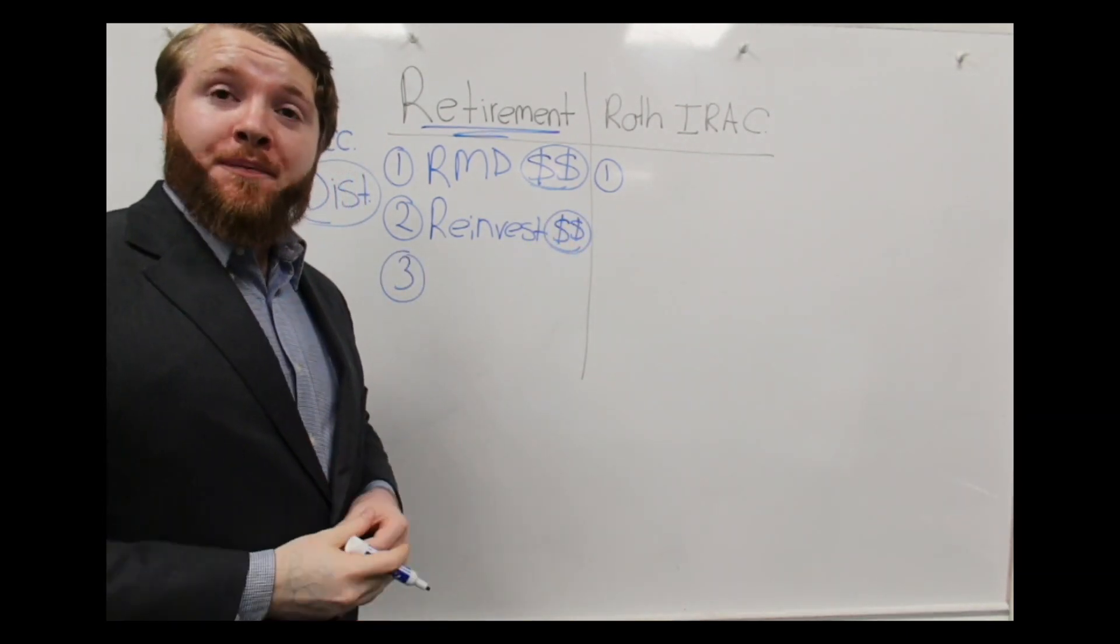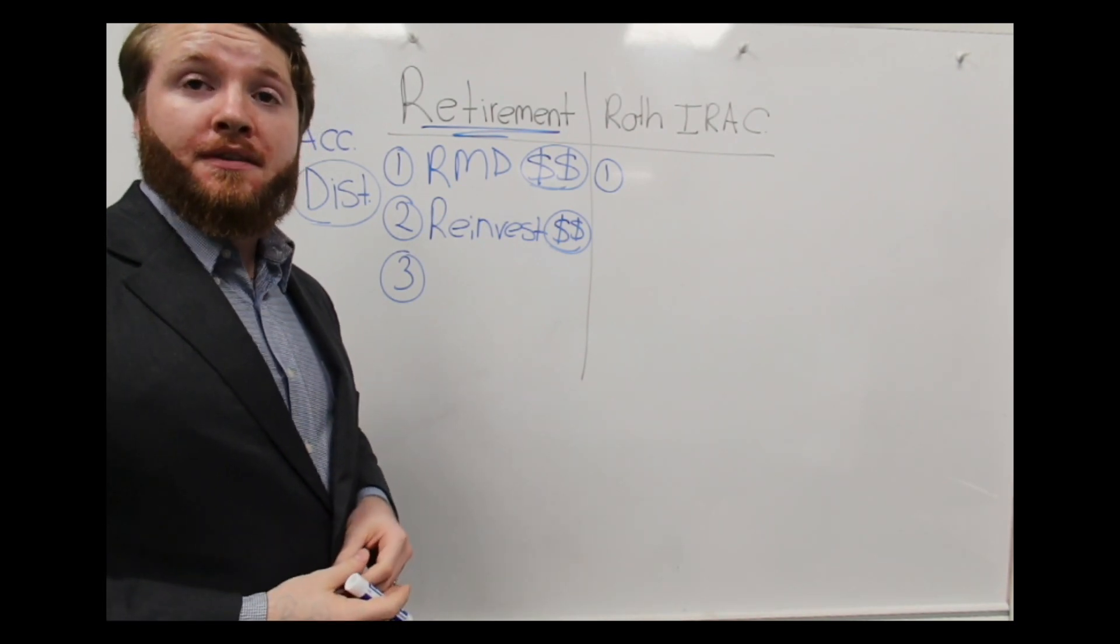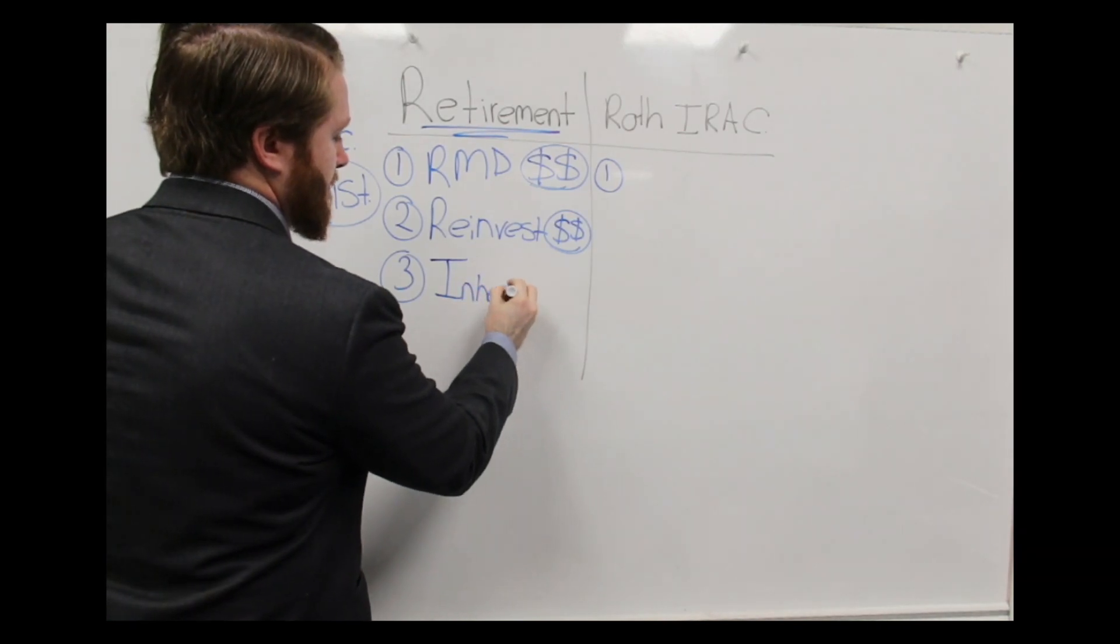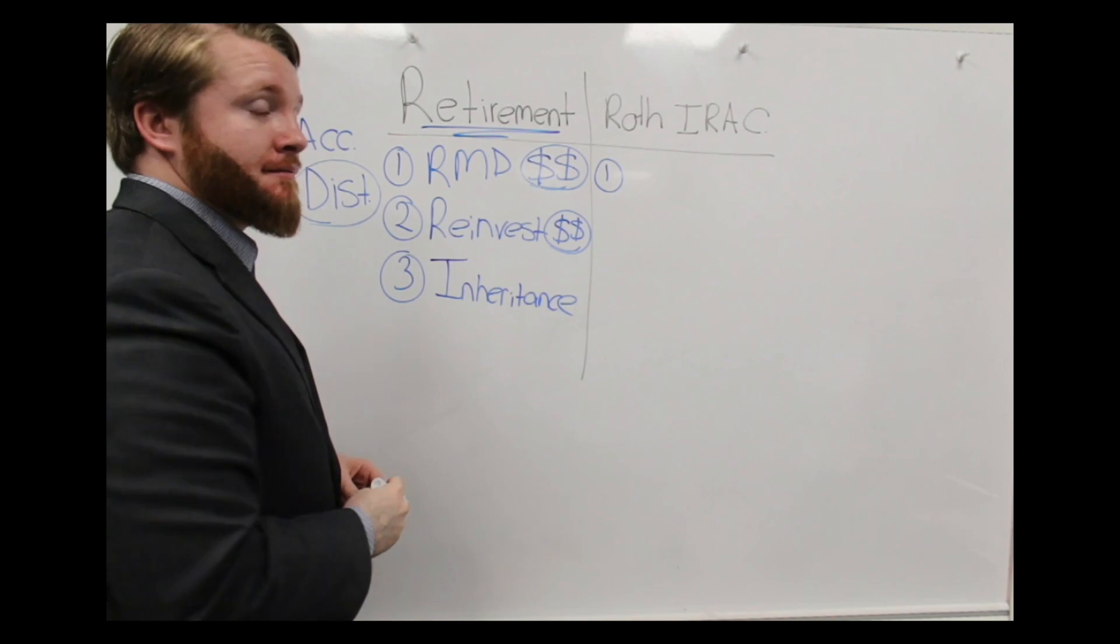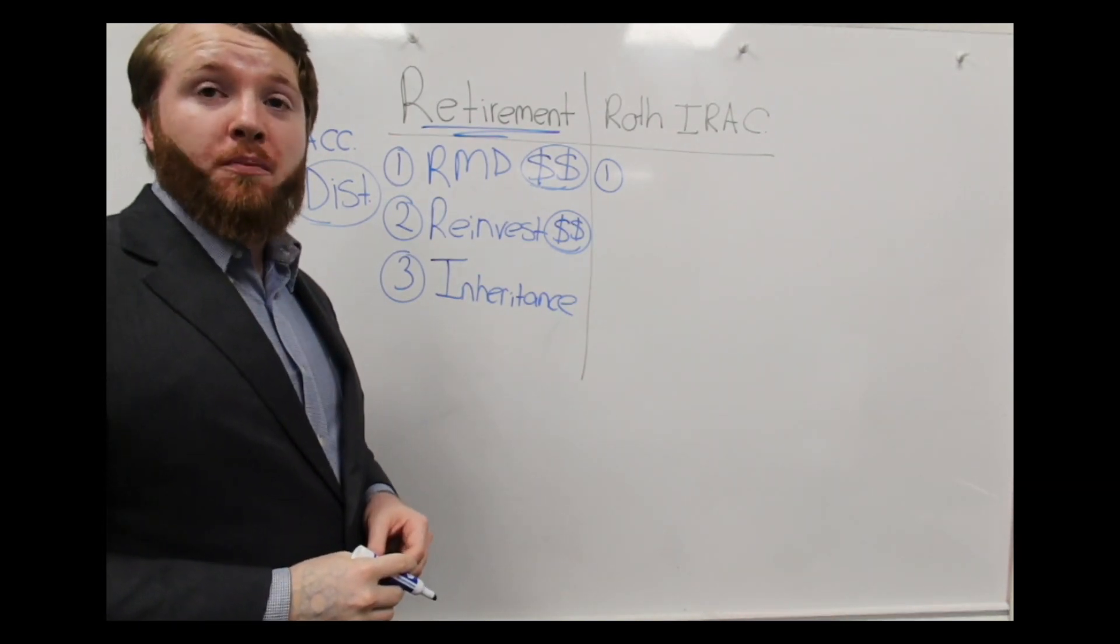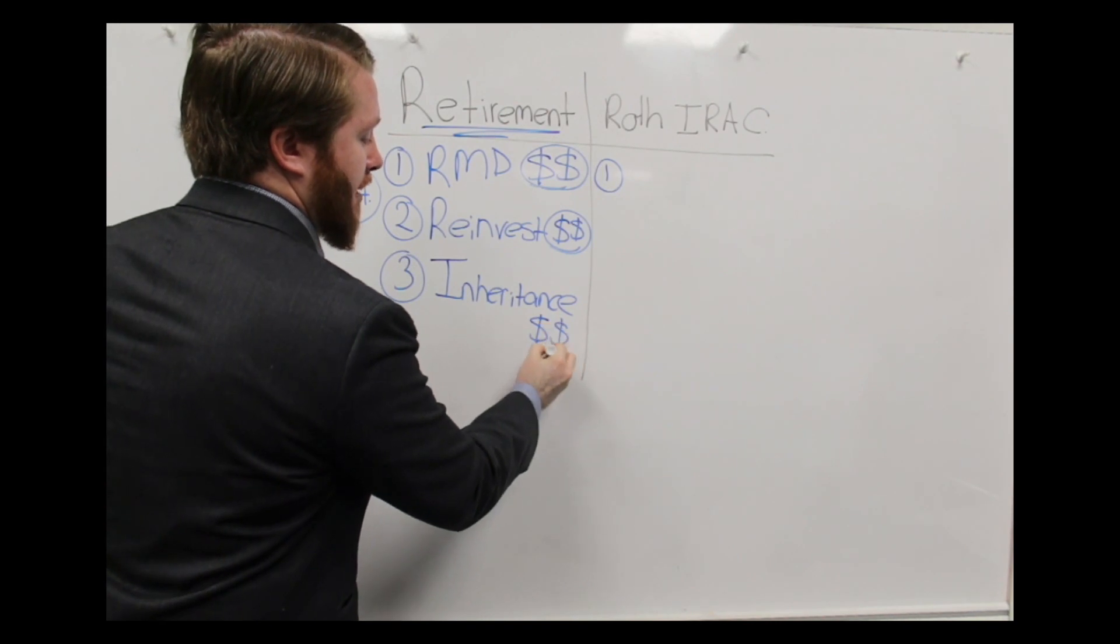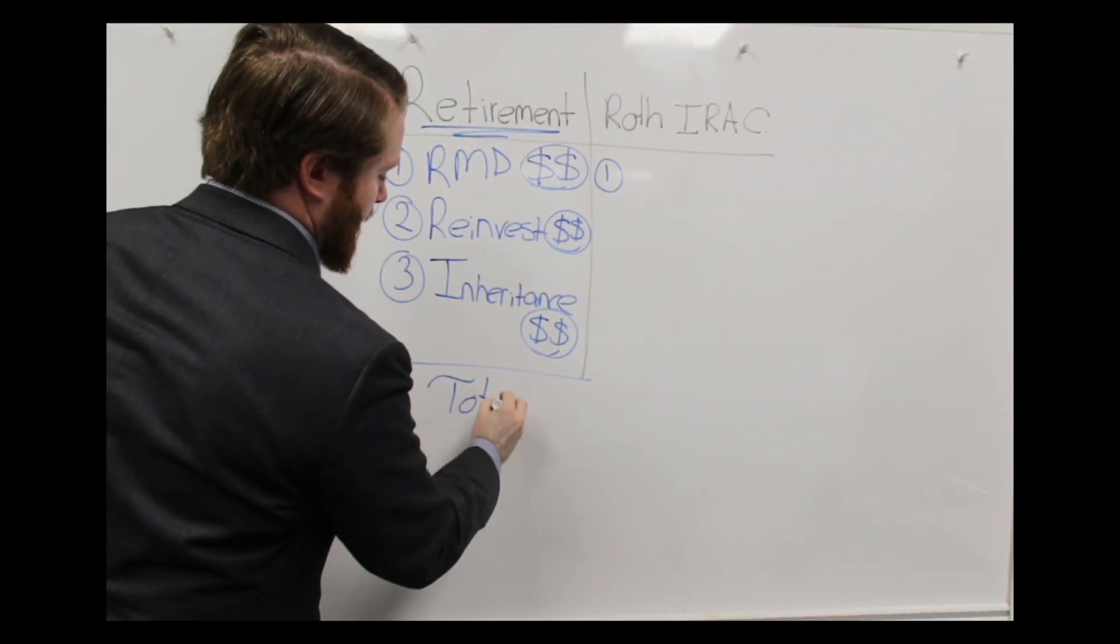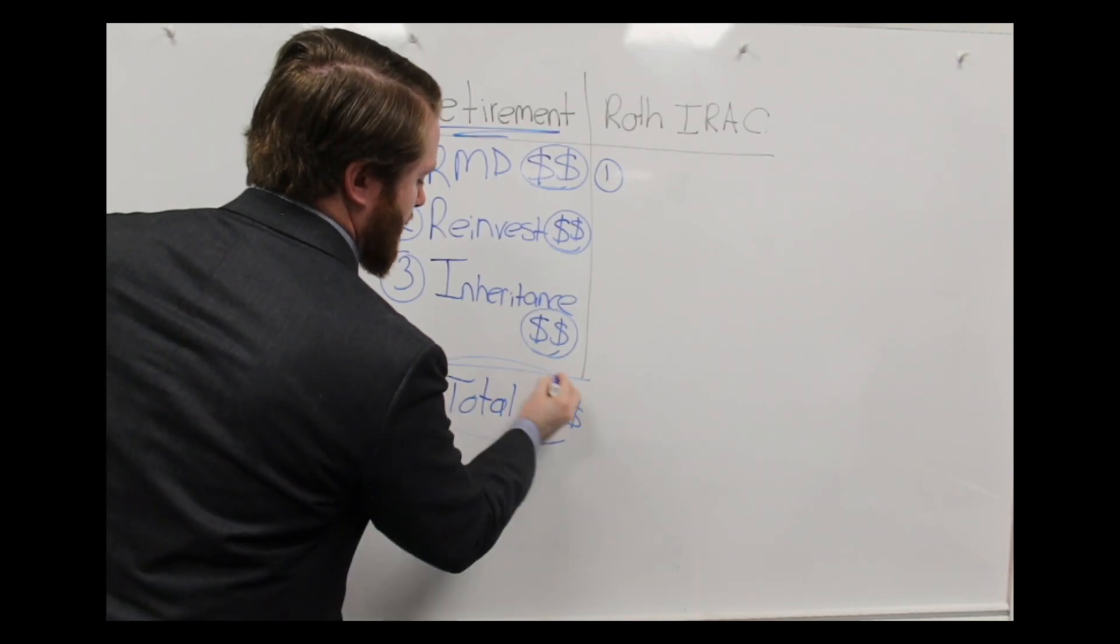And then you pass away, and you leave your hard-earned money to your children or your grandchildren. You leave an inheritance. Depending on your amount of money, your kids will also pay tax on that money. So we also need to figure out what that number looks like. And what we get is a total amount of money that you will pay on your retirement savings.